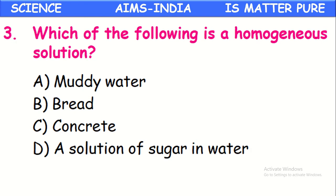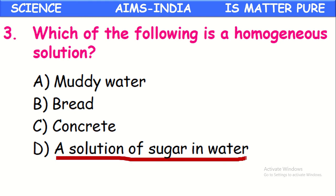Which of the following is a homogeneous solution? Options include muddy water, bread, concrete, and a solution of sugar in water. When sugar dissolves into water it completely dissolves and forms a homogeneous solution. So a solution of sugar in water is a homogeneous solution.